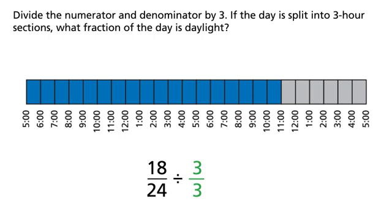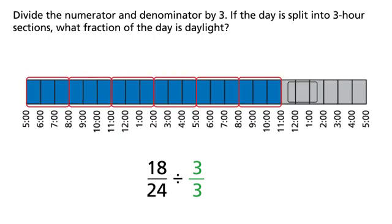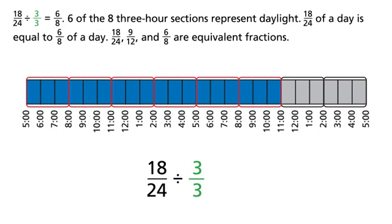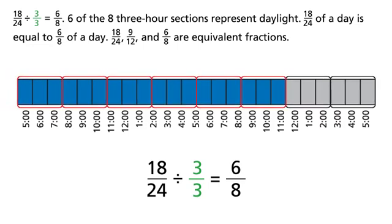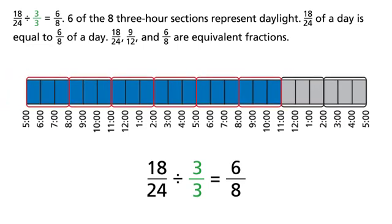Divide the numerator and denominator by 3. If the day is split into 3-hour sections, what fraction of the day is daylight? 18 24ths divided by 3 thirds equals 6 8ths. Six of the eight 3-hour sections represent daylight. 18 24ths of a day is equal to 6 8ths of a day. So 18 24ths, 9 12ths, and 6 8ths are equivalent fractions.